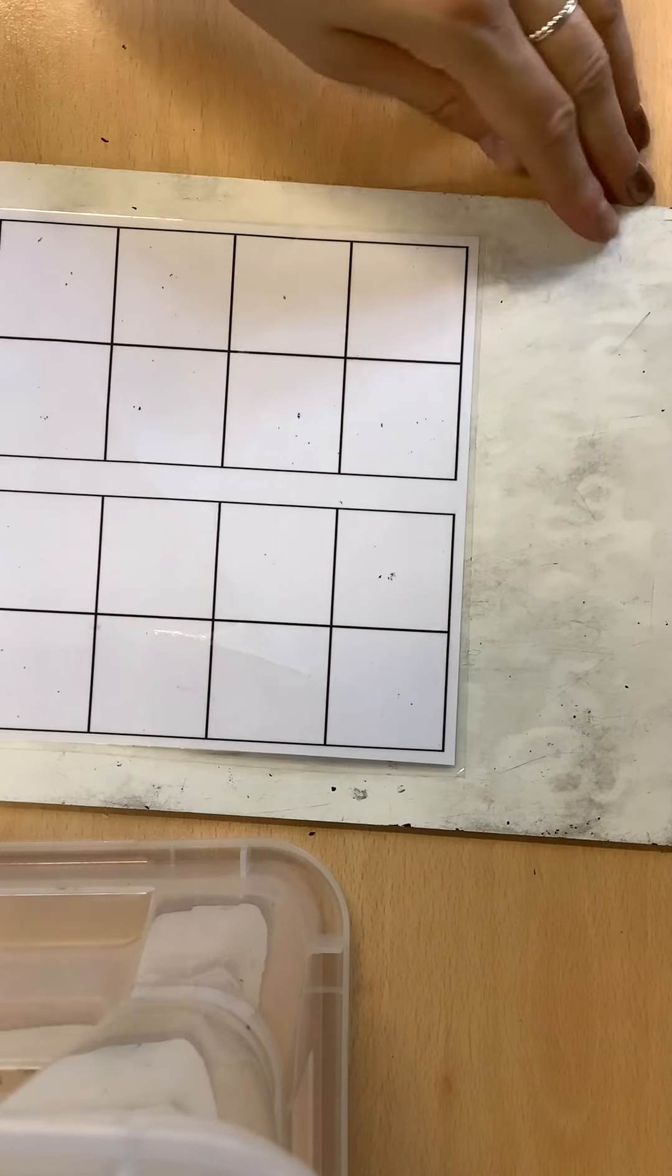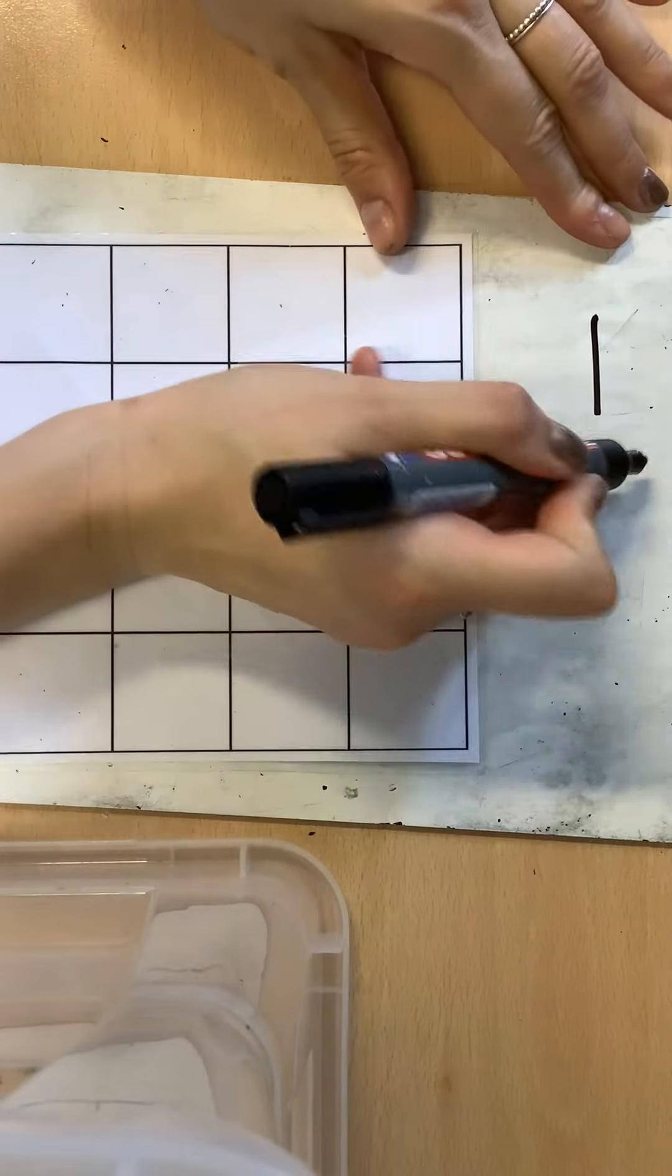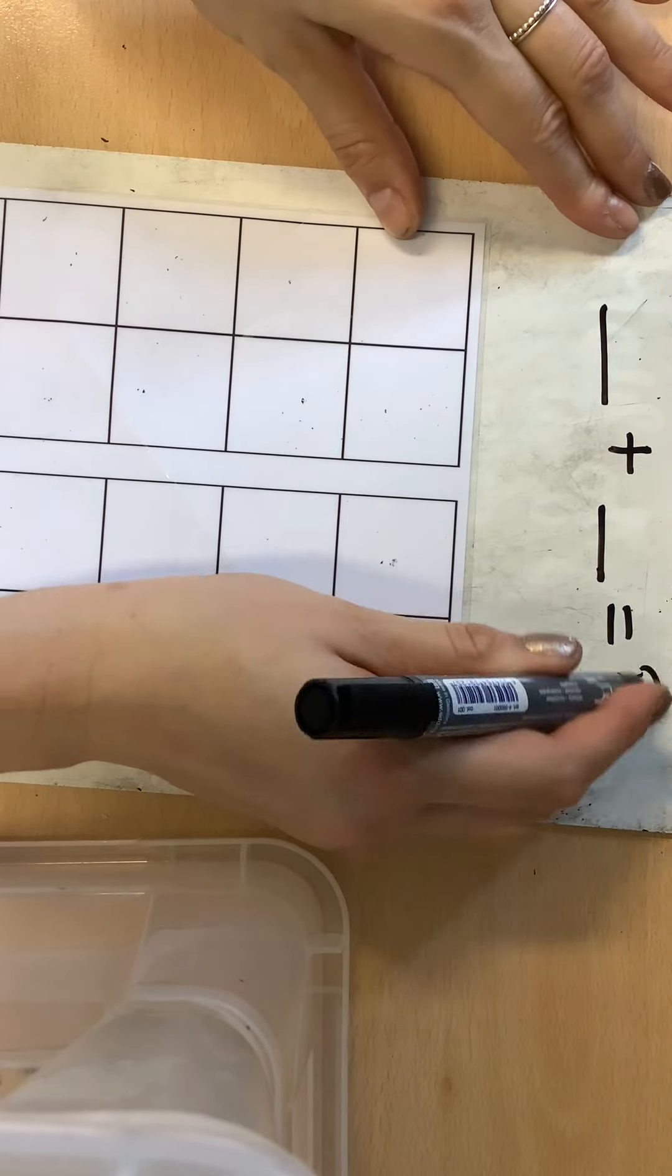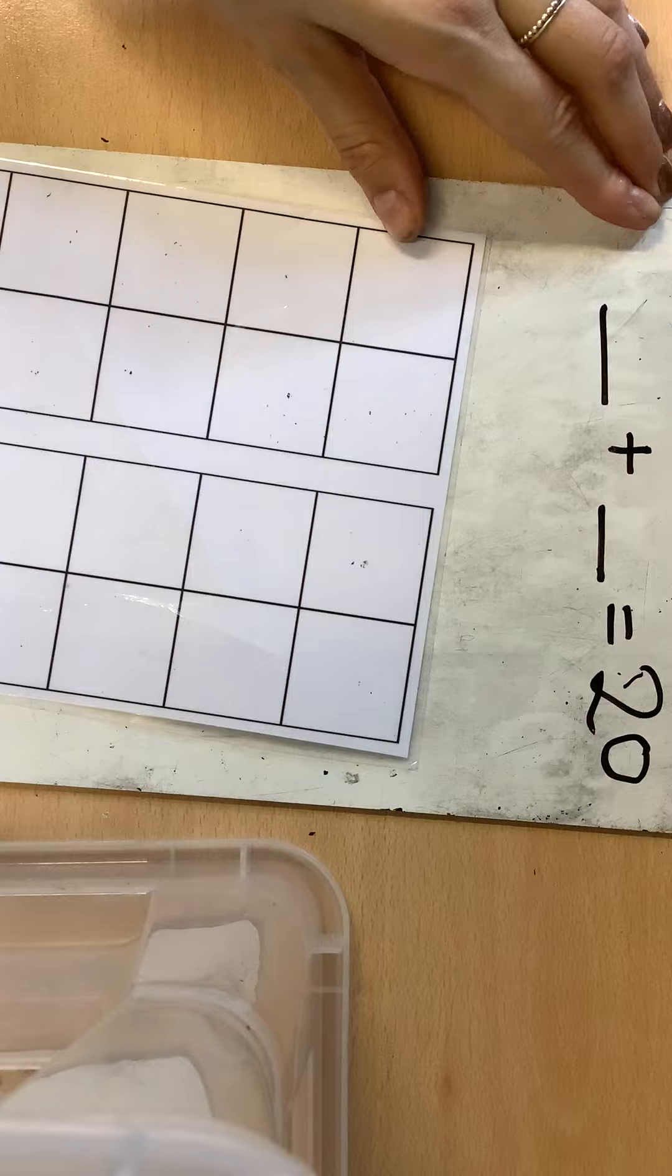We're going to find number bonds to 20. So two numbers that when they're added together make 20.